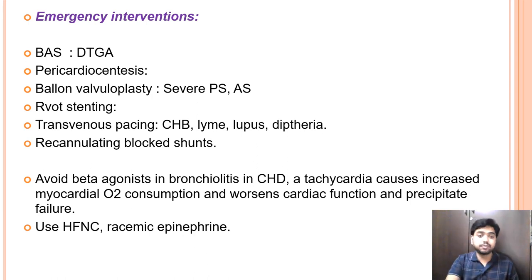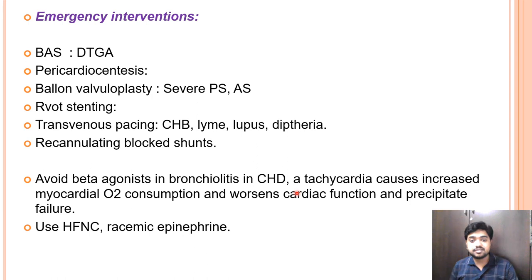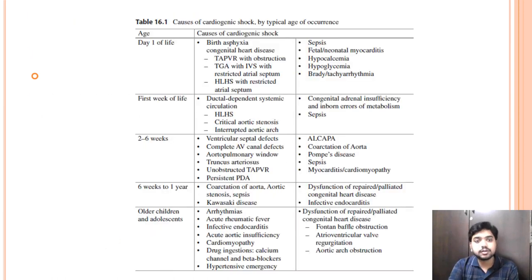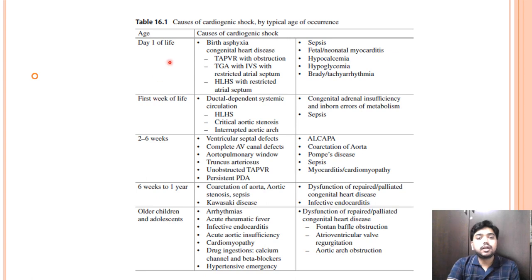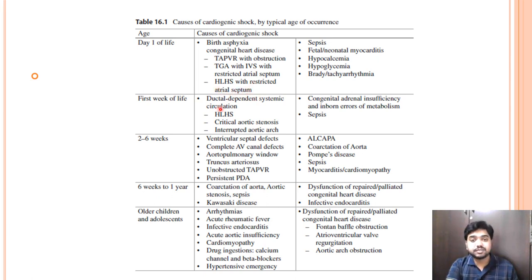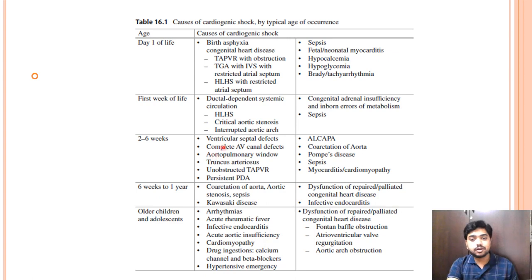Avoid beta-agonists in bronchiolitis with congenital heart disease since tachycardia increases myocardial oxygen consumption and worsens cardiac function — preferably use high-flow nasal oxygen or racemic epinephrine. Causes of cardiogenic shock by age: Day 1 — birth asphyxia, TAPVC, TGA with intact septum, HLHS. First week — duct-dependent systemic or pulmonary circulation lesions. Weeks later — VSD, ASD. Older children — arrhythmias, Kawasaki disease, cardiomyopathies.